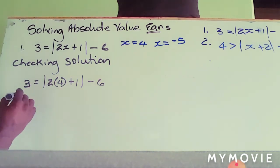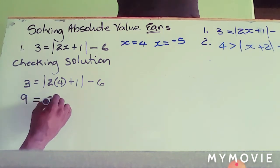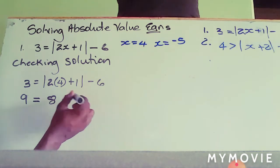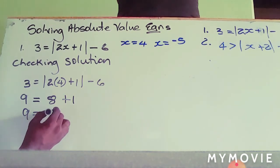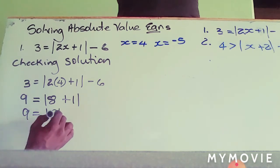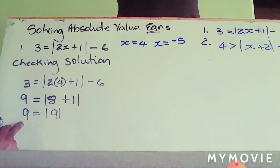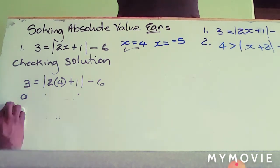We'll add six to both sides just to get the absolute value by itself, giving us nine. Two times four is eight, plus one gives nine. The absolute value of nine is nine, so x equals four is confirmed as a valid solution.